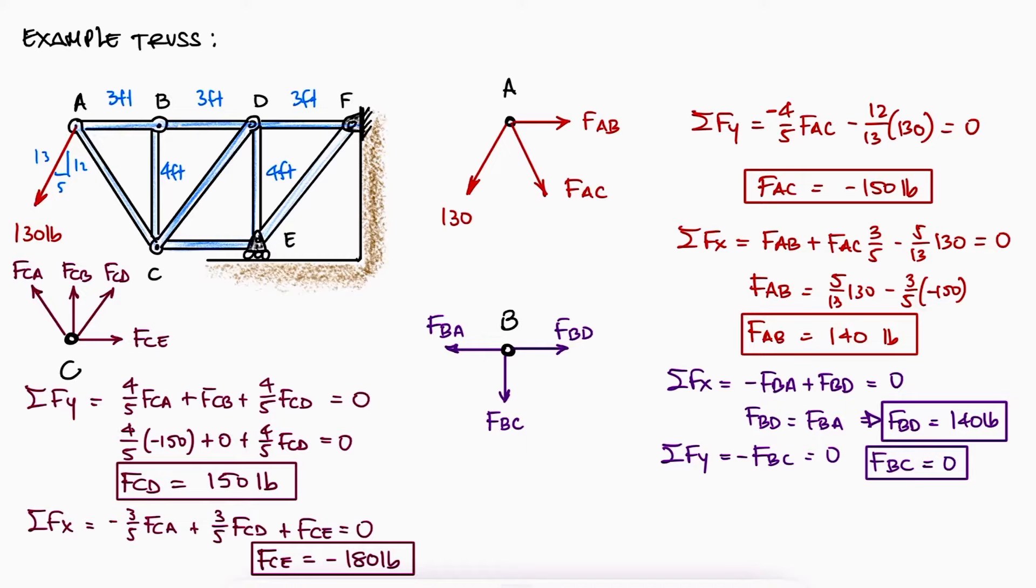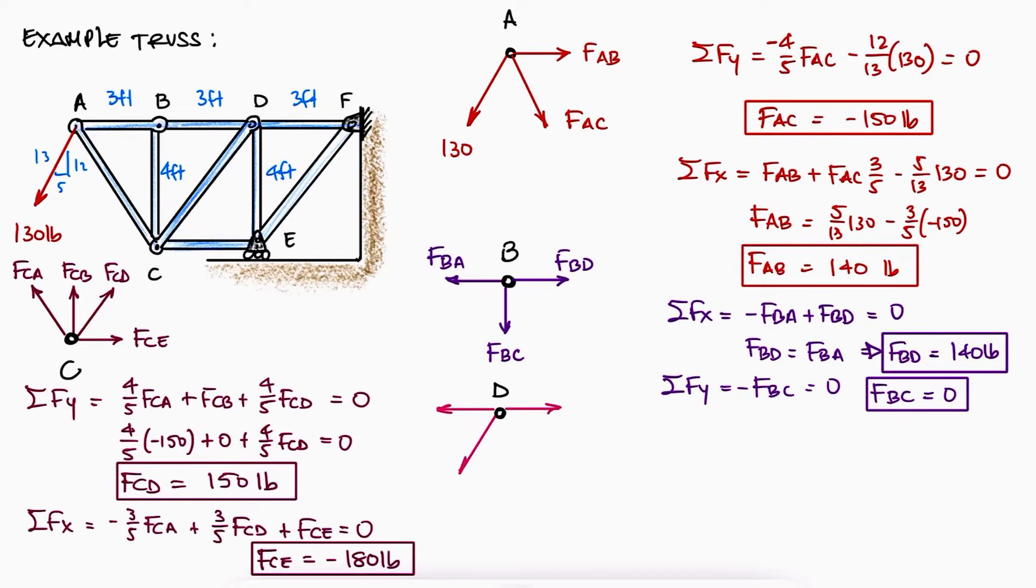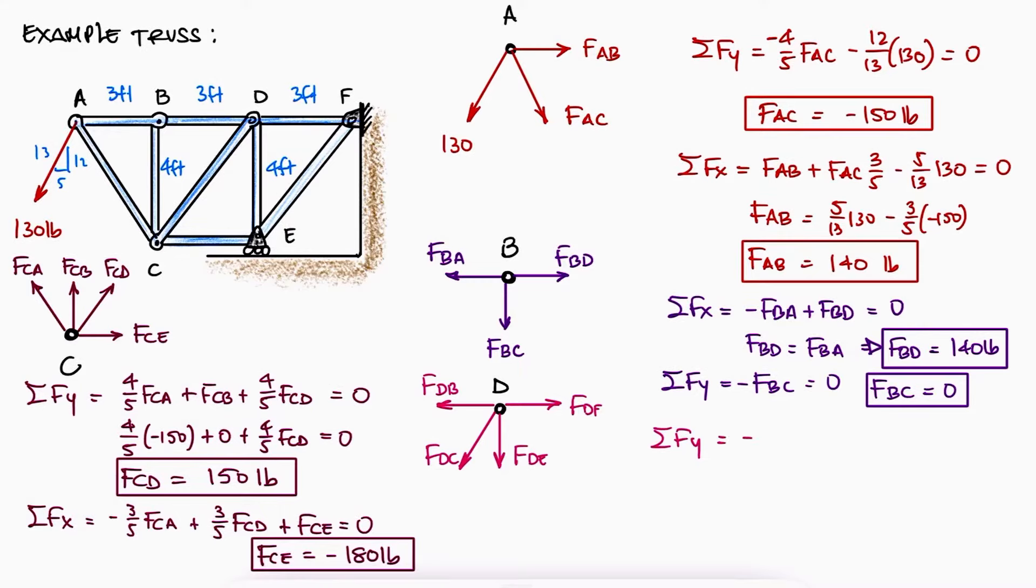Notice that we still draw FCA in tension because if one thing is essential in statics calculations, it's consistency. Finally, notice that the value we substitute for FCA is still negative from what we found before. Following the same process, joint D allows us to find FDE and FDF.